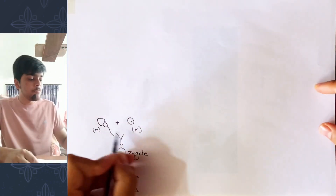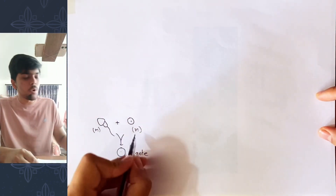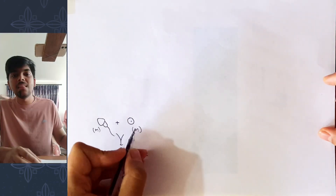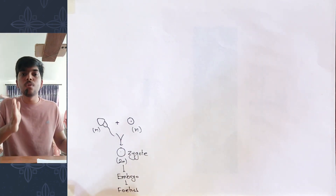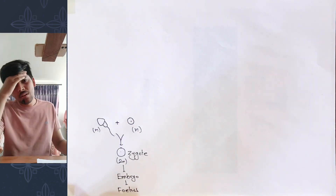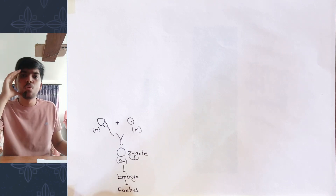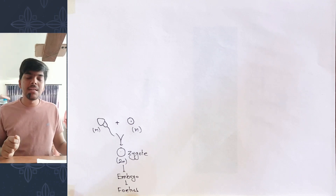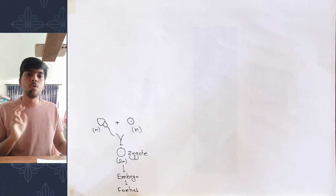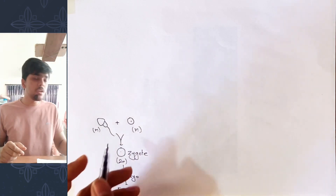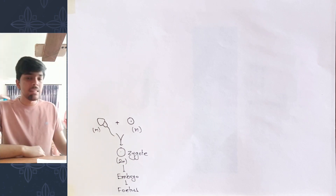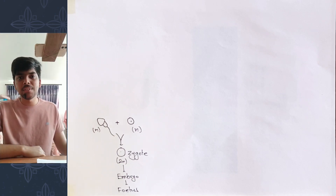The gametes that fuse together to form a diploid zygote are haploid — that is, sperm and egg contain half the number of chromosomes a typical cell contains. Throughout the human body, all cells are diploid, meaning they contain two sets of chromosomes. But gametes are haploid, containing only one of those two sets. How is it possible that our body forms something not typical to its other cells?